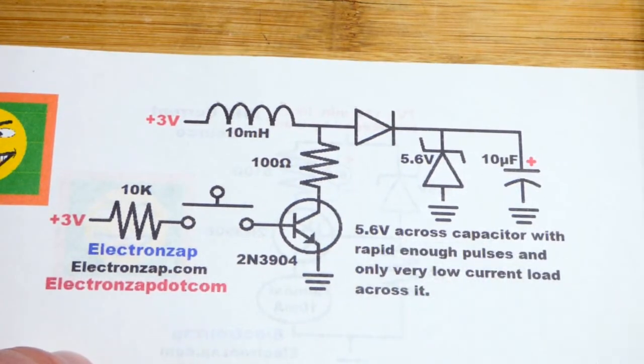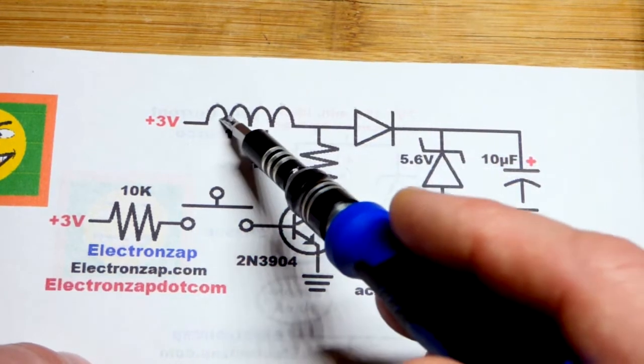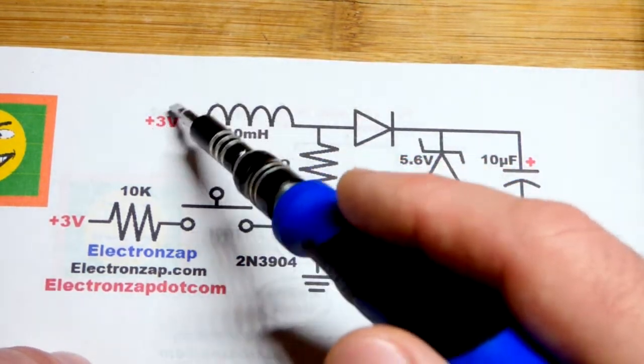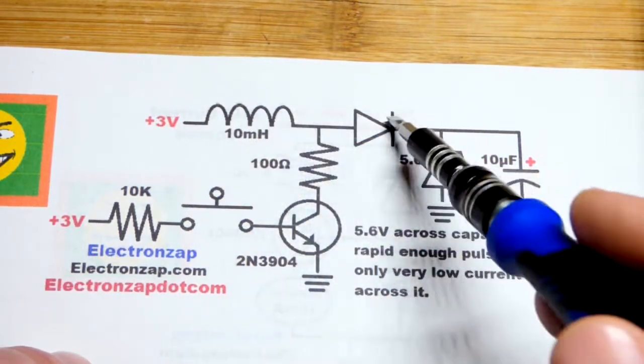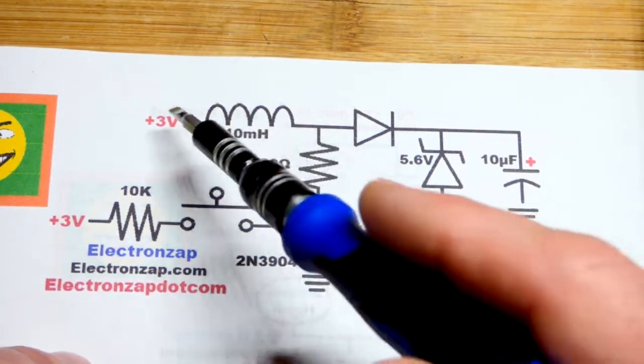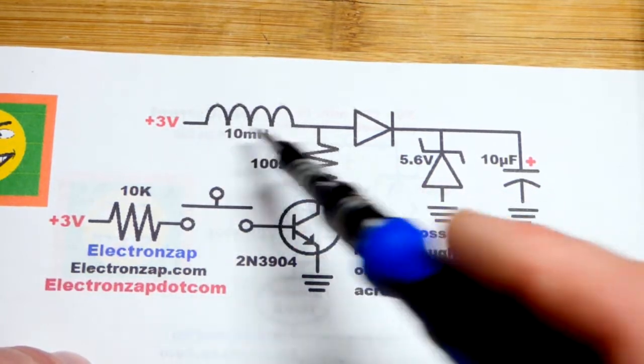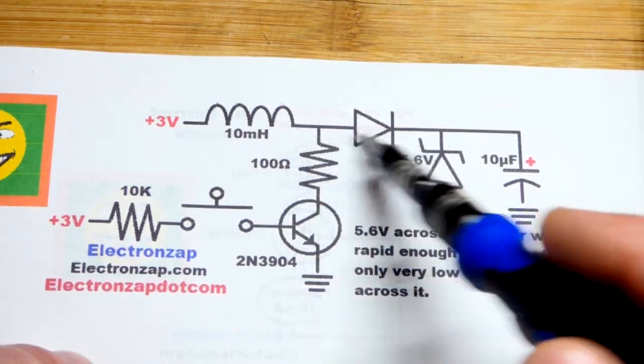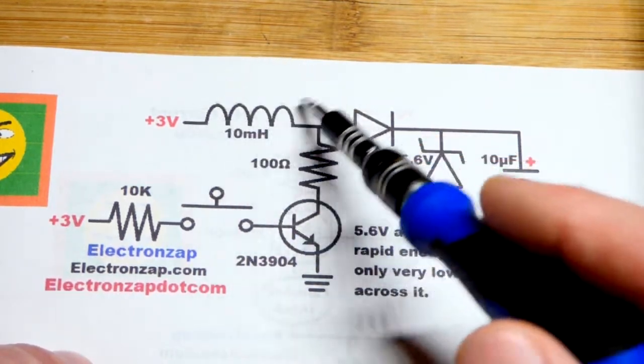Normally when you see inductors, this diode, the cathode here leads back to the positive supply. That way it does not conduct. The diode does not conduct while current's flowing through the inductor.